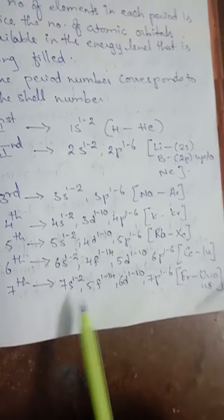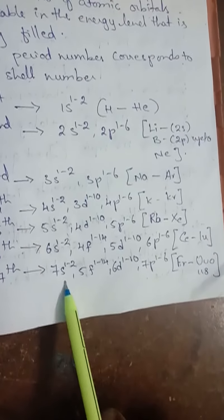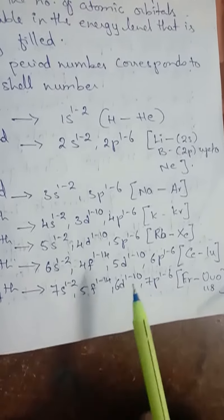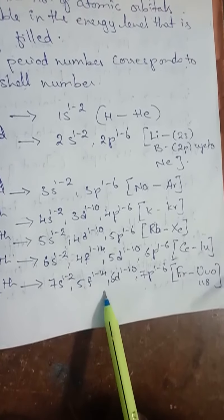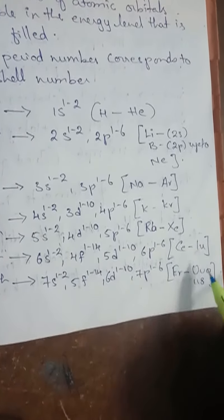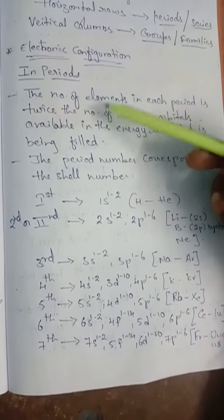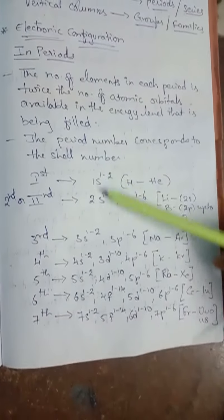There are 32 elements in the sixth period, which is called the longest period. The seventh period has the differentiating electron entering into 7s1-2, 5f1-14, 6d1-10, 7p1-6. This period is incomplete and is expected to end at the element with atomic number 118, oganesson. Filling up of the 5f orbital after actinium gives the 5f series, also called the actinide series. This is how the electronic configuration is present across periods.